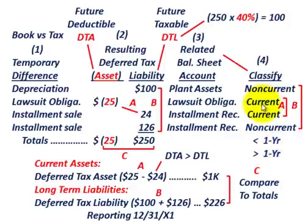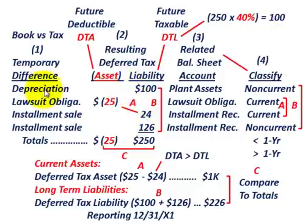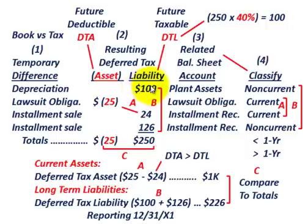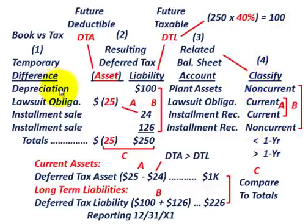A current classification applies where the underlying asset or liability has a life of less than one year. For example, for depreciation purposes — say you had excess tax depreciation — in later years you're going to have a deferred tax liability for that depreciation, because you took it for tax purposes earlier but can't deduct it in future years. Since depreciation relates to plant assets, which are non-current, this would be classified as non-current.